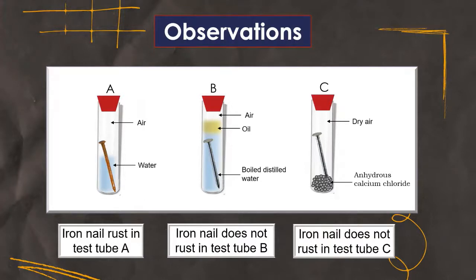The iron nail in test tube C is exposed to dry air. Here, anhydrous calcium chloride will absorb the moisture, if any, from air and makes the air dry. From these observations, we can see rusting of iron takes place